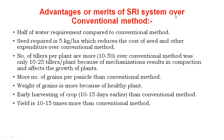Now we see the advantages or merits of SRI over conventional method. First, only half the water requirement is needed compared to conventional, because the soil is kept under saturated or moist conditions without flooding. Seed requirement in SRI is only 5 kg per hectare, which reduces costs, compared to 100 to 120 kg per hectare in the conventional method.